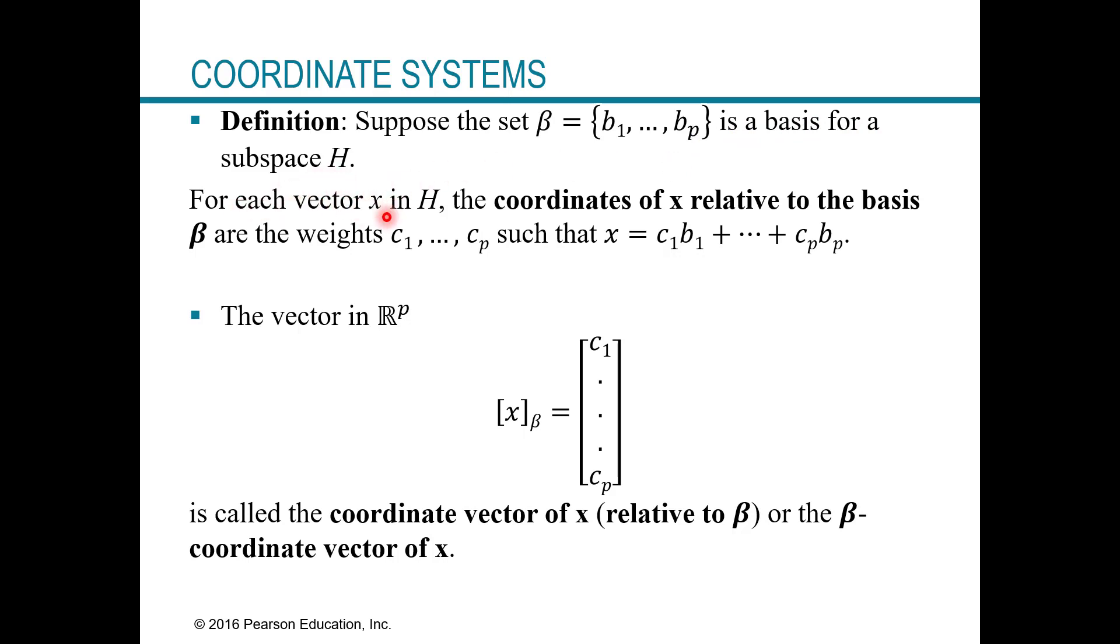Then for each vector x in H, the coordinates of x, so like how you would locate x relative to that basis, are the weights c1 and so on, such that x equals a linear combination of the vectors and the basis with those weights on them. So it might sound complicated, but we'll see a visual in a little while, but just think of it like this. It's saying, how can I locate x if you want to visualize it in space, but using the vectors that form this basis for the subspace.